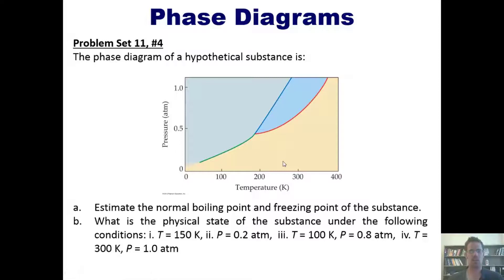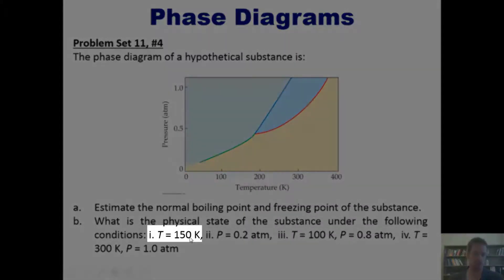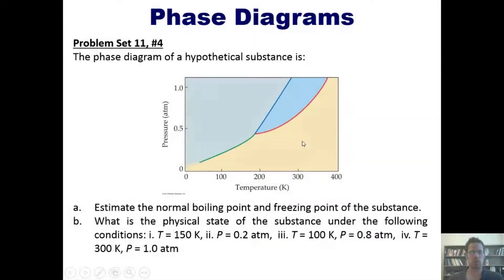In question B, it asks us to identify the physical state, either liquid, gas, or solid, under the following conditions. The first one says a temperature of 150 Kelvin. Let's find where 150 Kelvin is on this phase diagram. It appears right here. As you trace up 150 Kelvin, you'll see that the substance is either going to be a gas or it's going to be a solid, depending on what the pressure is, and that's kind of interesting to imagine.